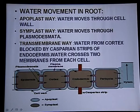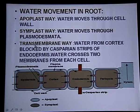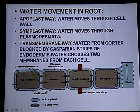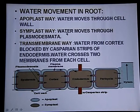The third is the transmembrane pathway. When water reaches the endodermis, the Casparian strips are present in the tangential walls of the endodermis. Casparian strips are made of a fatty substance called suberin. When water moves from cortex to endodermis, it gets blocked due to the Casparian strips present in the tangential walls of the endodermis. So water begins to pass through two membranes — through the plasma membrane — and that is called the transmembrane pathway.